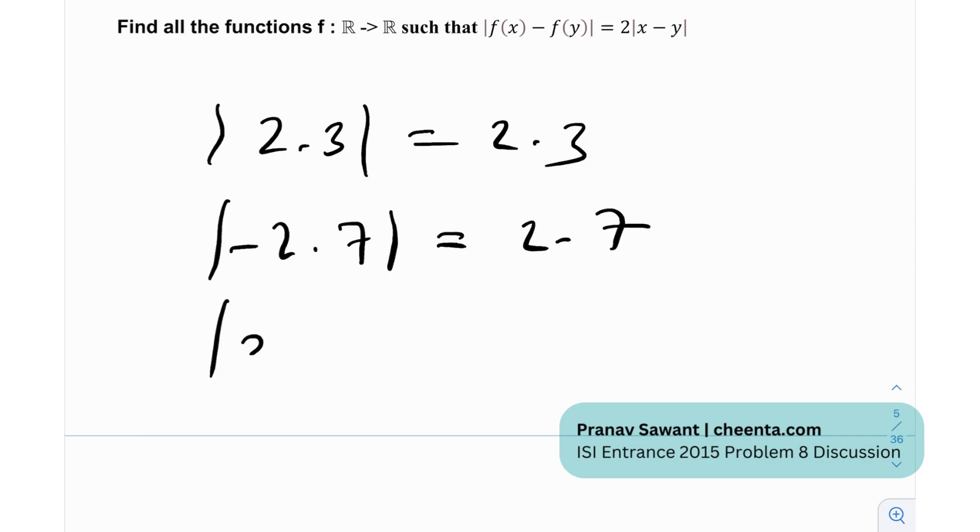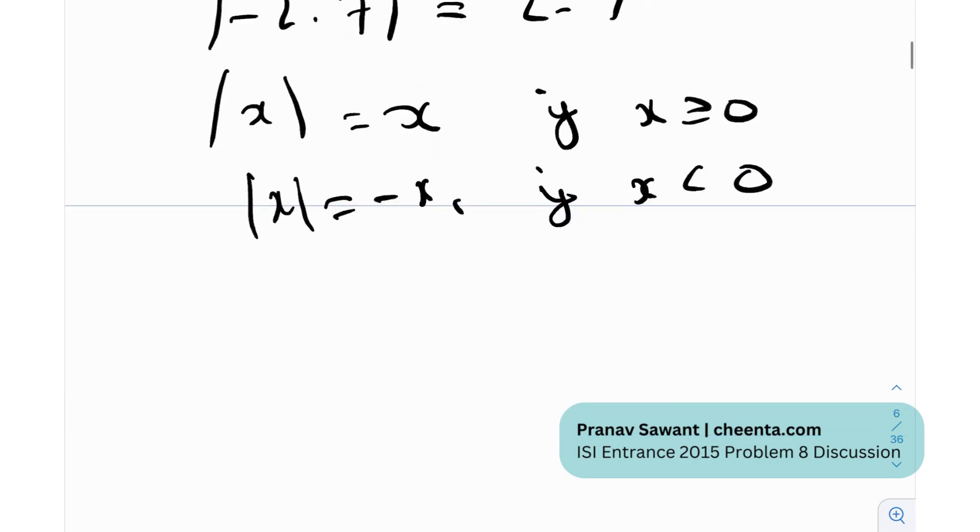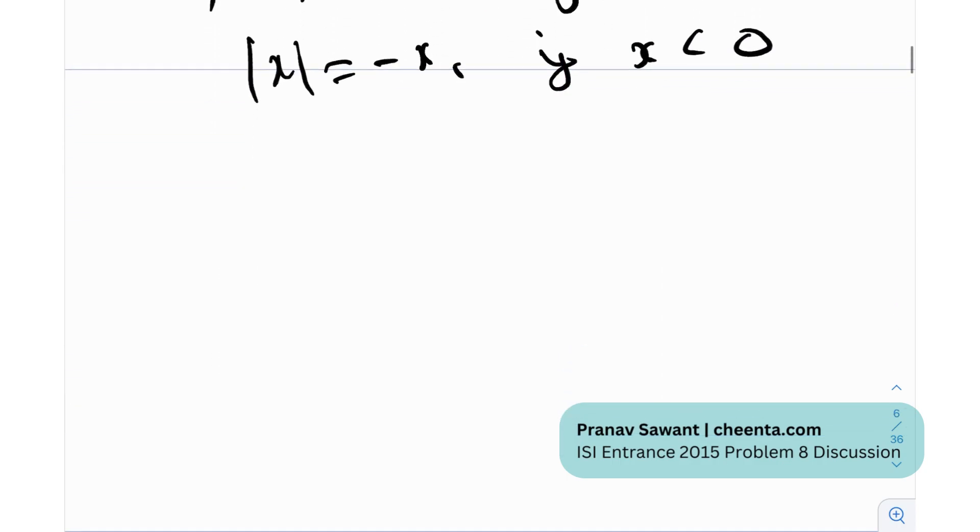It essentially converts any negative number into positive. The output is essentially always positive. So, for example, mod x, more formally, mod x is essentially x if x is greater than 0, and mod x is actually negative x if x is less than 0. There's maybe some formal things that are good to know. But in this question particularly, they've given us this modulus of f(x) minus f(y) is equal to twice mod of x minus y.